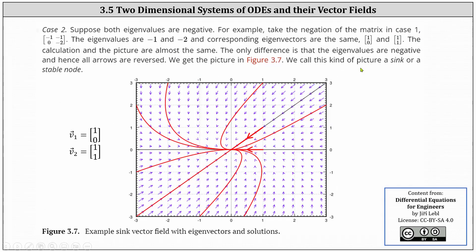For case two, suppose both eigenvalues are negative. For example, take the negation of the matrix in case one, where now the entries are -1, -1, 0, and -2. Here the eigenvalues are negative one and negative two, and the corresponding eigenvectors are the same: (1, 0) and (1, 1), which are already graphed below. The calculation and the picture are almost the same; the only difference is that the eigenvalues are negative, and hence the arrows are reversed. Notice now the arrows are pointing in the opposite direction of the eigenvectors because both eigenvalues are negative. The result is figure 3.7. We call this kind of picture a sink or stable node.